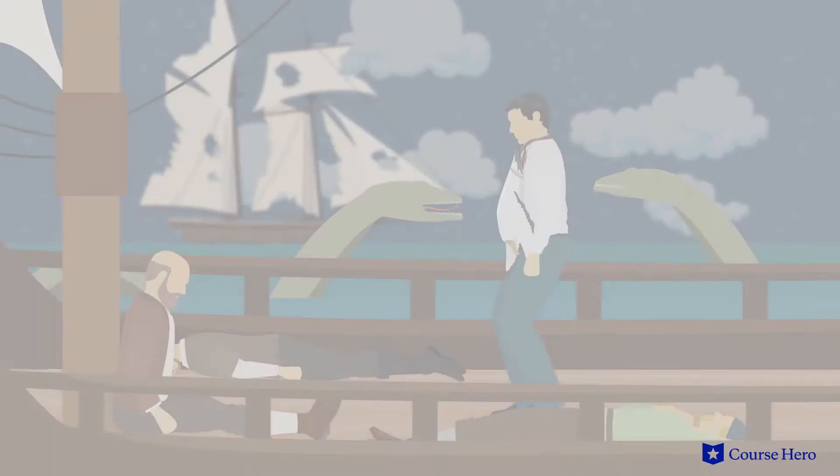The mariner has no food or water, but still he lives. He watches sea serpents swim in the water, blessing their presence. When the albatross breaks free from the mariner's neck, he is suddenly able to pray again.